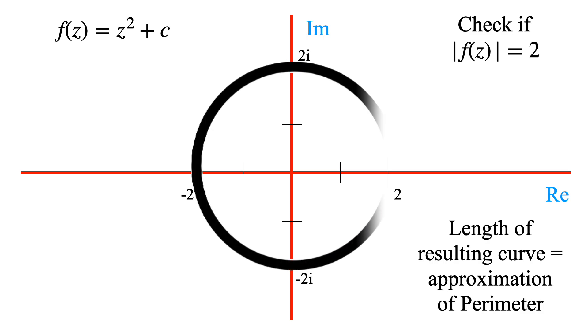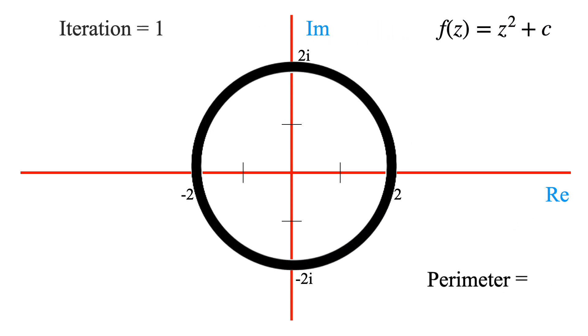Okay, so let's start the iterative process. After the first step, we only get the points that lie on a circle of radius 2. The length of this is just the circumference, which is 2 pi times r, or 4 pi.